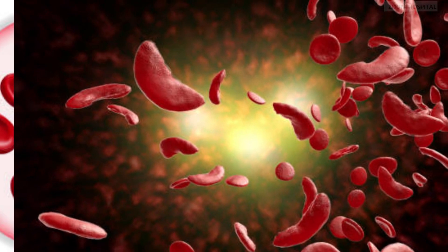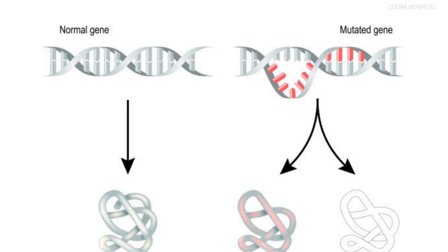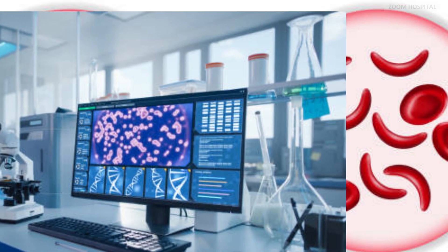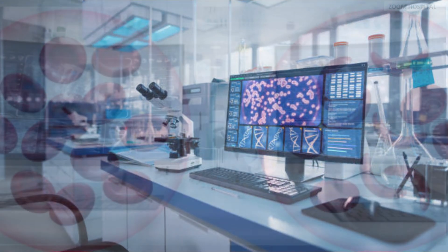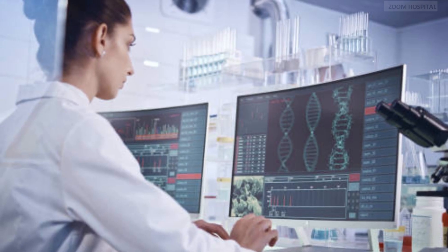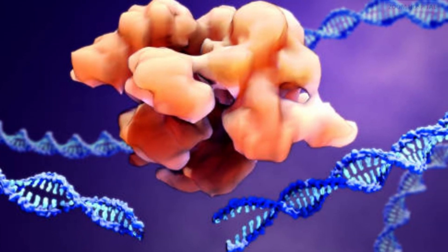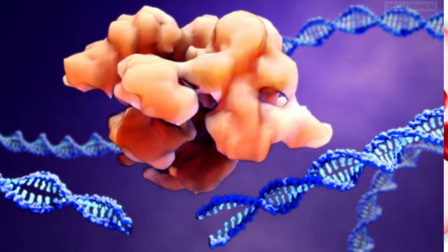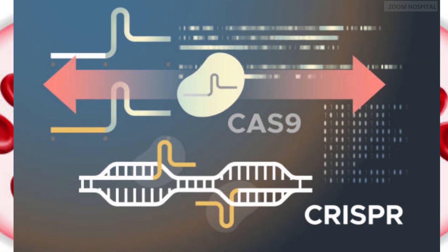To treat sickle cell disease using CRISPR, scientists correct the genetic mutation responsible for the abnormal hemoglobin in an indirect way. The process typically involves several steps. Step one: identifying the mutation — scientists first pinpoint the specific gene to correct. Step two: designing the CRISPR Cas9 system — they design a guide RNA that matches the sequence of the gene they want to remove. This guide RNA acts as a molecular address that guides the Cas9 enzyme to the precise location of the gene to cut.